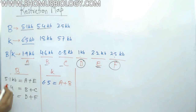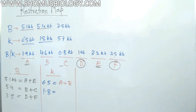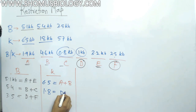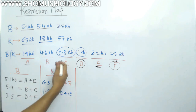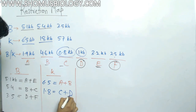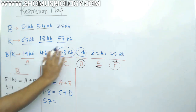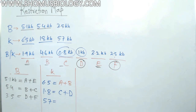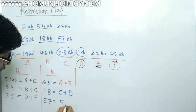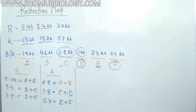For K continuing: 1.8 kb equals 1.0 + 0.8, so D plus C. And the last fragment, 5.7 kb, equals 3.2 + 2.5, so E plus F. So we now have a complete list of compositions for enzyme B and enzyme K.